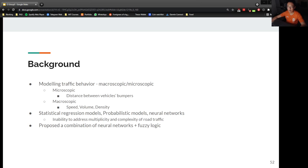There are existing methods that make use of statistical regression models, probabilistic models or neural networks. But these have their limitations. Statistical regression models are unable to address the multiplicity and complexity of road traffic and probabilistic models are difficult to implement and design. Therefore, the author has proposed a hybrid technique combining neural networks and fuzzy logic for automatically deriving from experimental data approximate yet robust rule-based models.